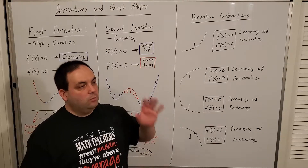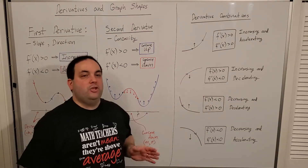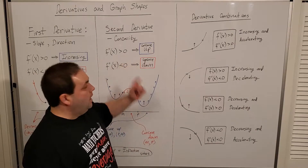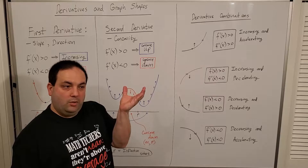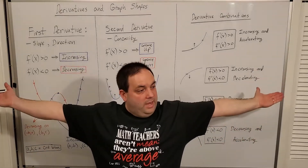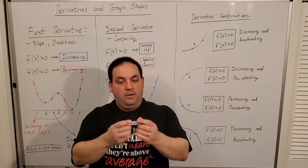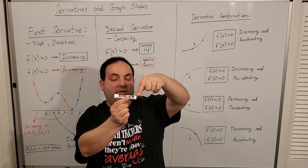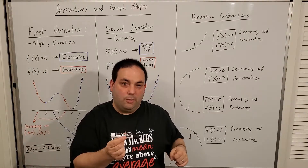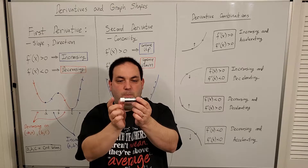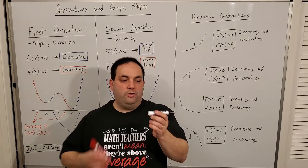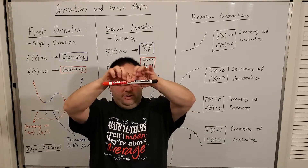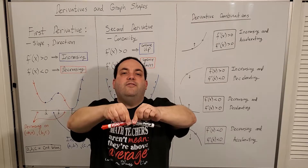We're not at the point in calculus yet where we'd formally define curvature — that comes later with vectors. But we can use concavity like an on-and-off thing, similar to increasing and decreasing. If something is concave up, it's like a U-shape, but it doesn't have to be that dramatic. Something concave up could be just ever so slightly curved off a line. Something completely straight has no concavity — the second derivative at all those places would be zero. If you bend it just slightly in one direction, it's concave up; if bent slightly downward, it's concave down.